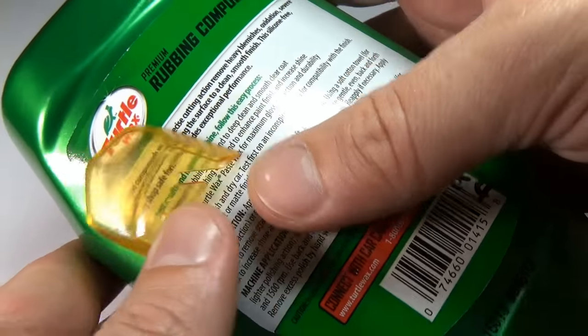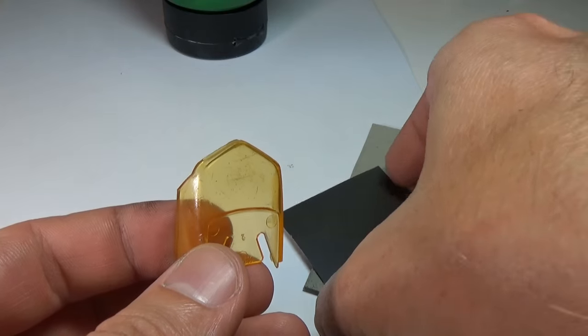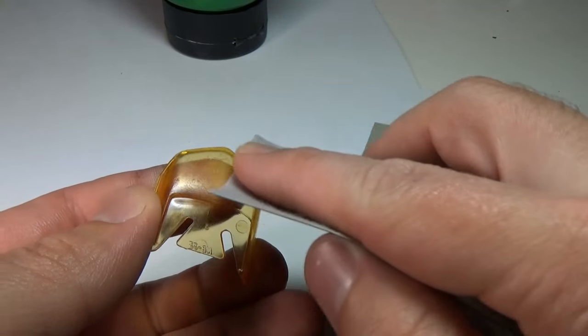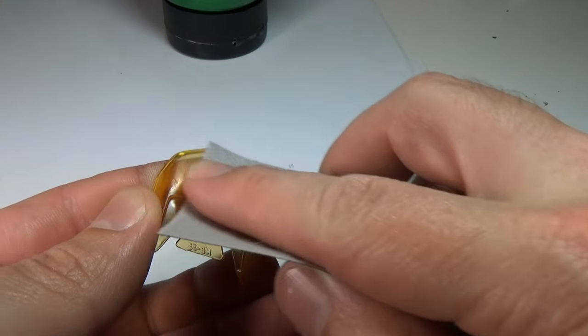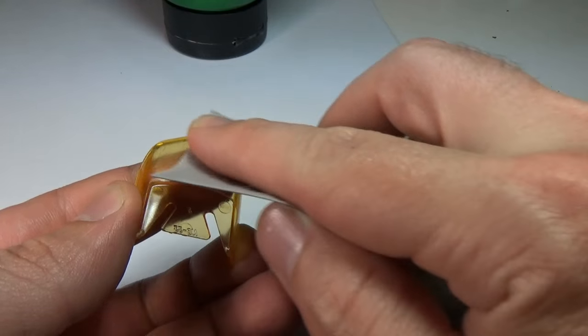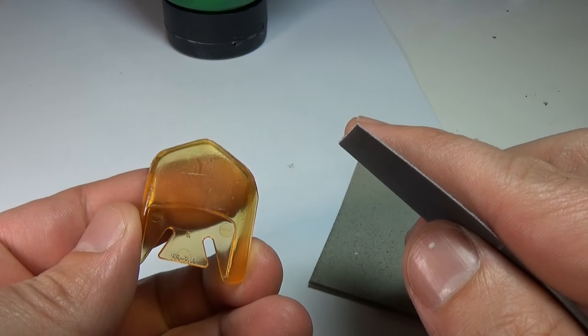To get these scratches out we're going to start with 2000 grit sandpaper and sand them out. Don't worry, we'll get the plastic to go clear again in a bit. If your windshield is really scratched up you may want to start with something like 600 or even 400 grit. Whatever you use, make sure you sand until the scratches are out.